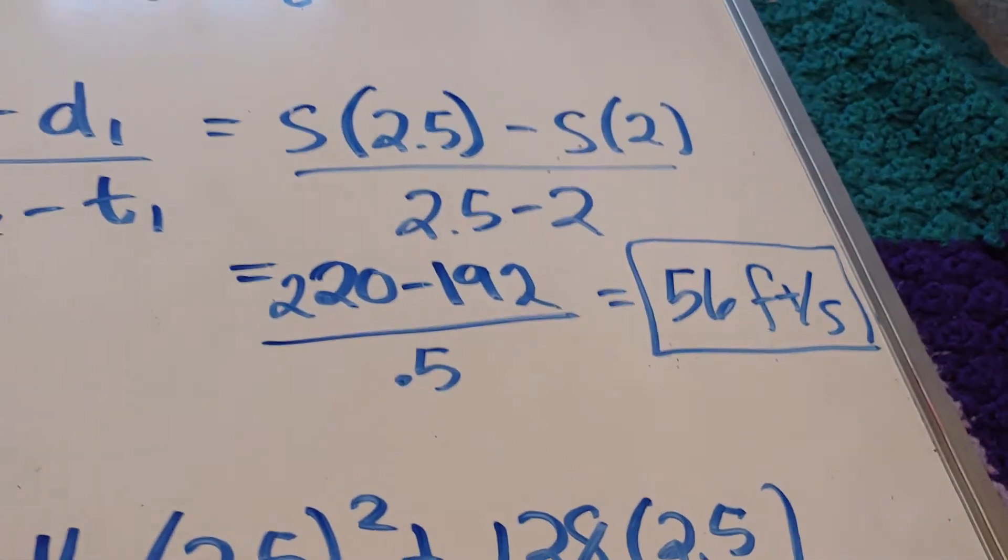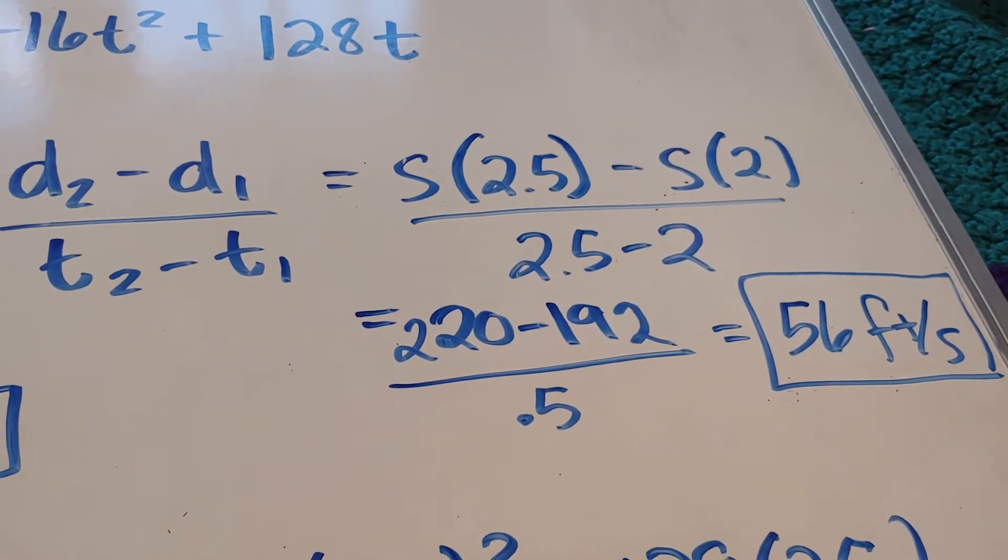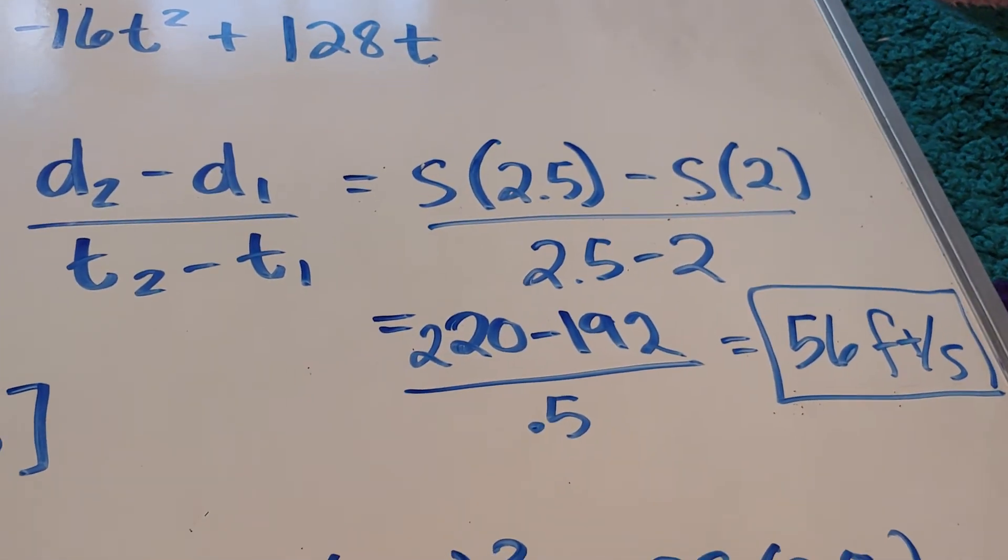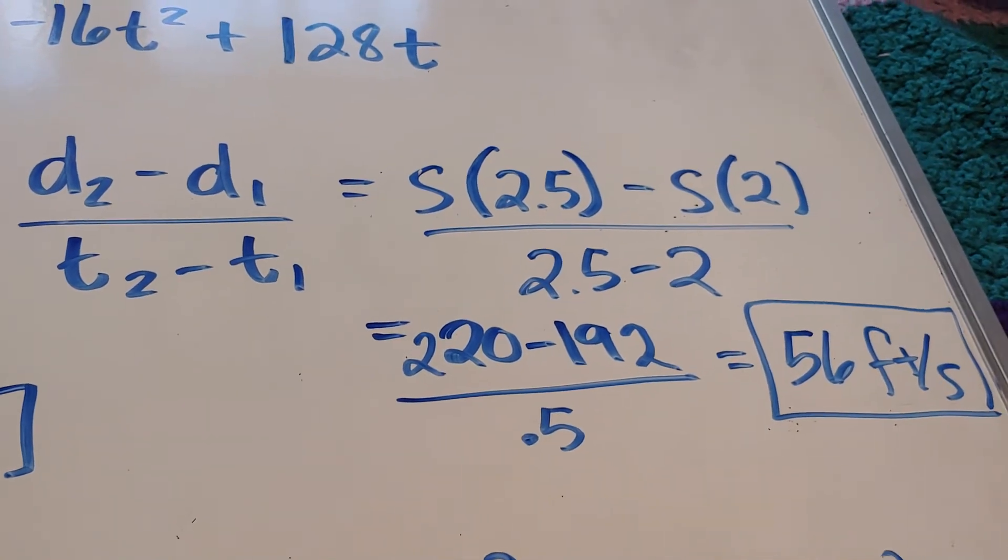And I get 56 feet per second. So we just found the average velocity from the time frame of 2 to 2.5 seconds.